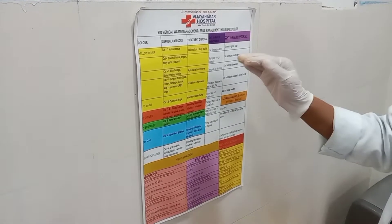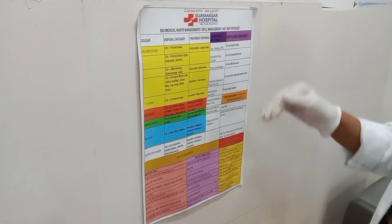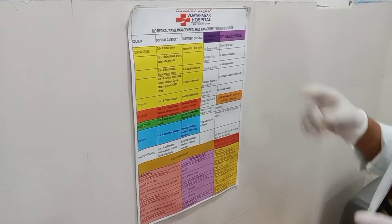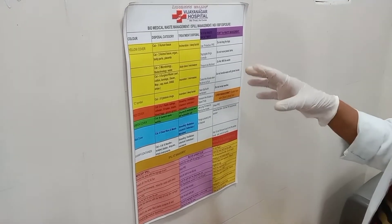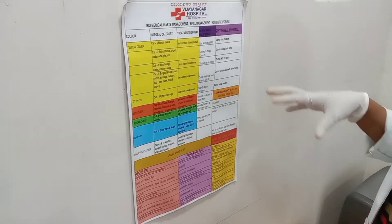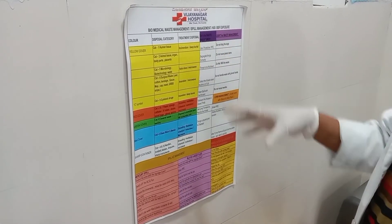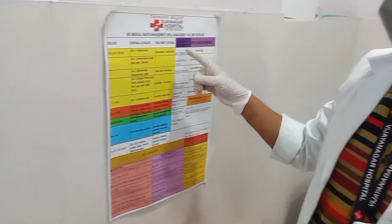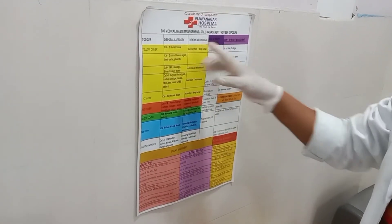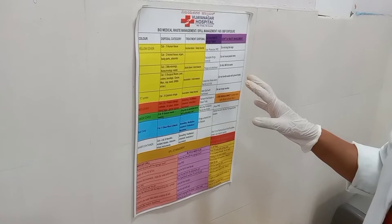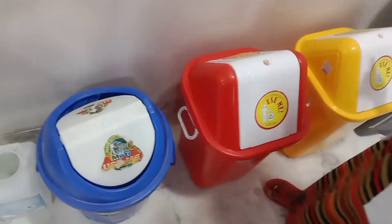Biomedical waste is an infectious or hazardous waste which is generated in a hospital or healthcare setting during diagnosis, treatment, and immunization. During this process we extract the hazardous waste. We can see four categories of waste, and here you can see the color coding — we have kept color-coded bins accordingly.